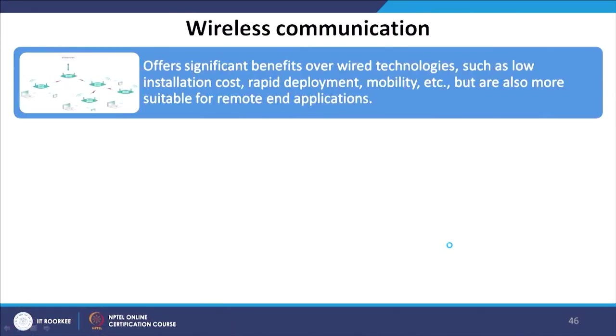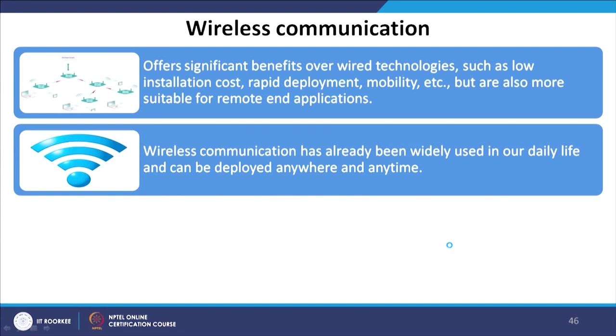Wireless communication offers significant benefits over wired technology such as low installation cost, rapid deployment, and mobility, and is also more suitable for remote applications. Wireless communication has already been widely used in daily life and can be deployed anywhere, anytime. This is not a new technology, but we should take advantage of this existing wireless technology and incorporate it within our energy grid to make it smarter.